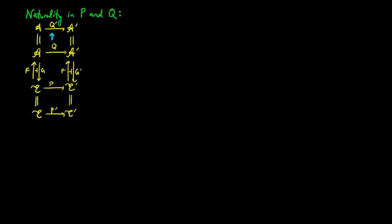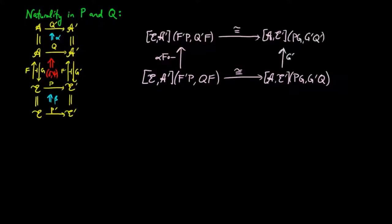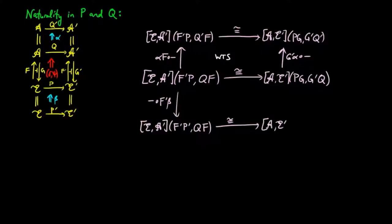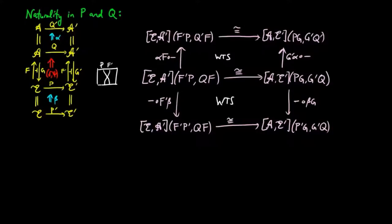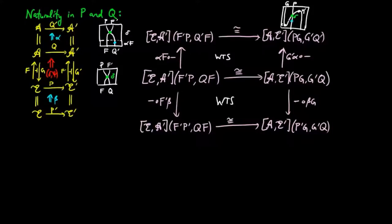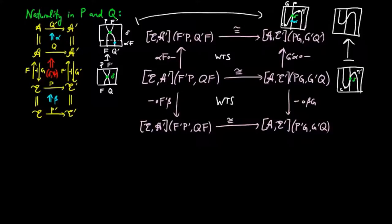This means given a natural transformation alpha from q to q prime, and a natural transformation beta from p prime to p, the following two squares commute. The vertical maps in the top square are post-compositioned by alpha, and the vertical maps in the bottom square are pre-compositioned by beta. So given a natural transformation delta from f prime p to qf, we take the high road, giving us the natural transformation g prime q prime epsilon, g prime alpha f, g, g prime delta g, eta prime p g. And then we can see that the low road takes us to g prime alpha, g prime q epsilon, g prime delta g, eta prime p g, which is clearly seen to be equal by naturality, making the top square commute.